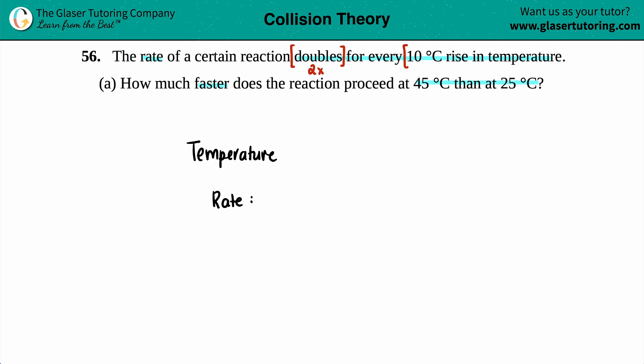Every 10 degree rise in temperature. To start off with, we want to know how much faster does this reaction proceed at 45 than at 25. So it seems like we are increasing our temperature from our starting temperature at 25 degrees Celsius and we are ending at 45.